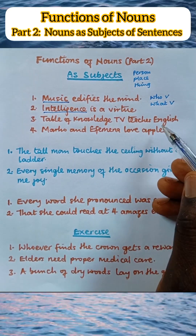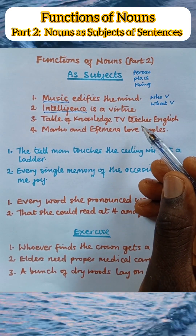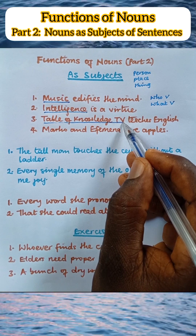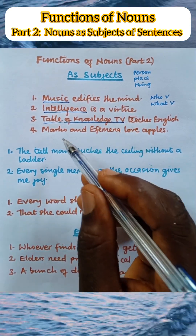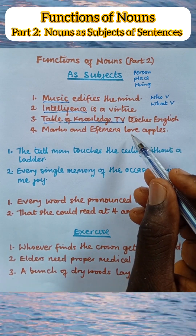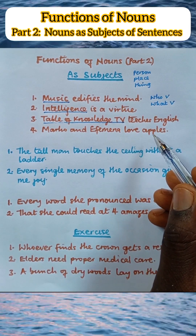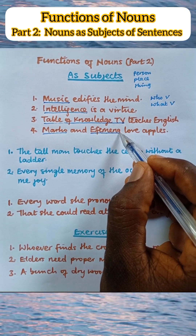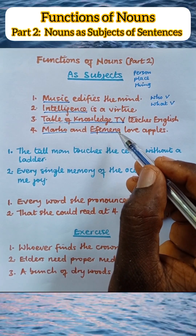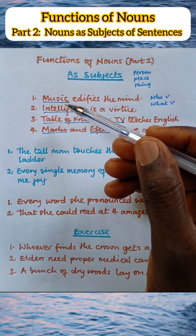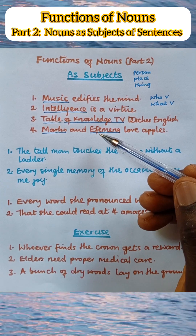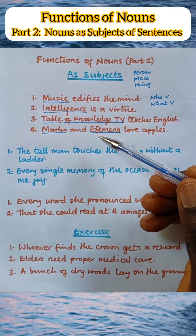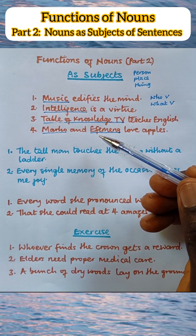Next: 'Table of Knowledge TV teaches English.' The verb here is 'teaches,' and we ask, 'What teaches English?' It is Table of Knowledge TV. So Table of Knowledge TV is the subject of this sentence and, as such, it is a noun. 'Maru and Ifemena love apples.' Who love apples? It is Maru and Ifemena. So Maru and Ifemena are the subjects of this sentence — they are nouns. Note that subjects always come before the verb. In each of these examples we have a single word or single name as the subject. We could also have a group of words such as phrases and clauses as the subject of sentences, in which case they are nouns.